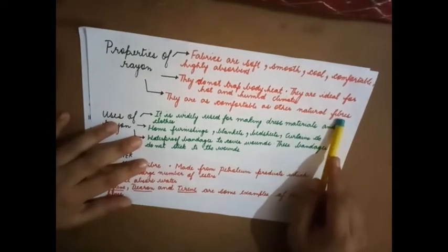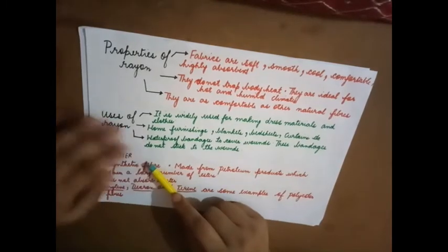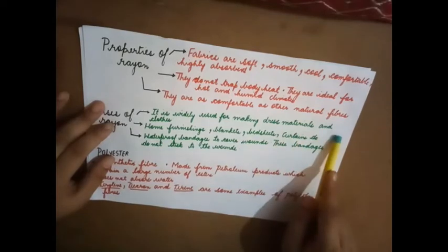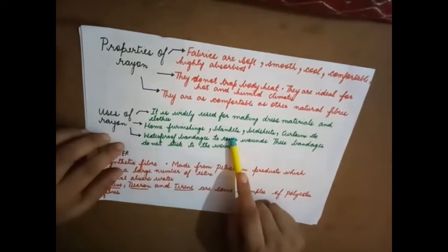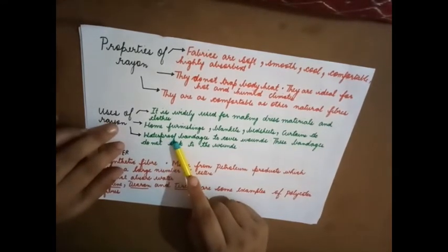Uses of rayon: It is widely used for making dress materials and clothes, home furnishings, blankets, bed sheets, curtains, etc.